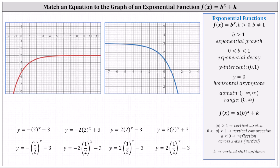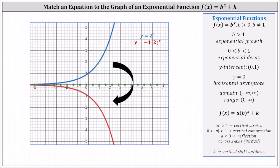For example, if we graph y equals two to the power of x, we have the blue graph, which is exponential growth — notice the graph is increasing. If we now graph y equals negative one times two to the power of x, the exponential growth function is reflected across the x-axis vertically, which gives us the red graph.